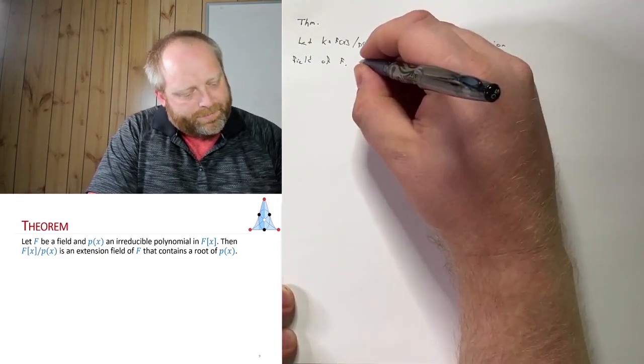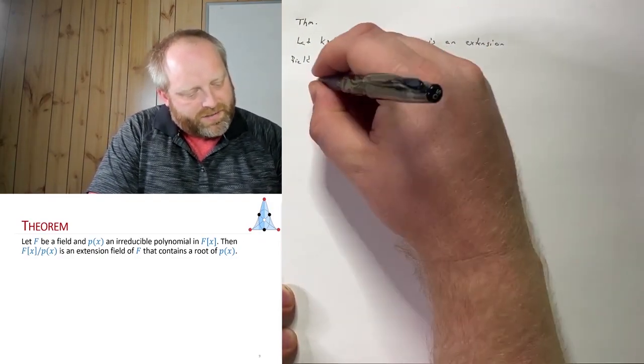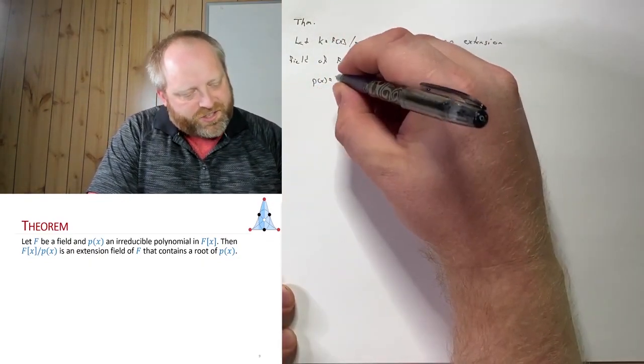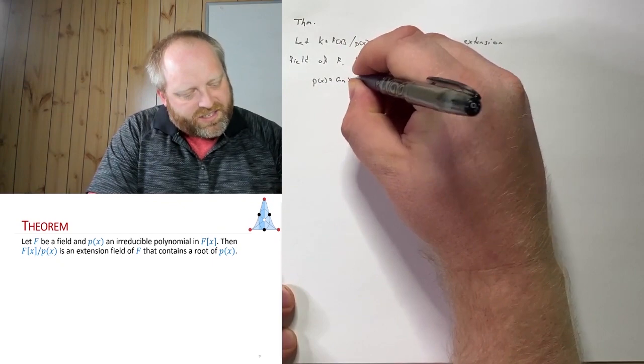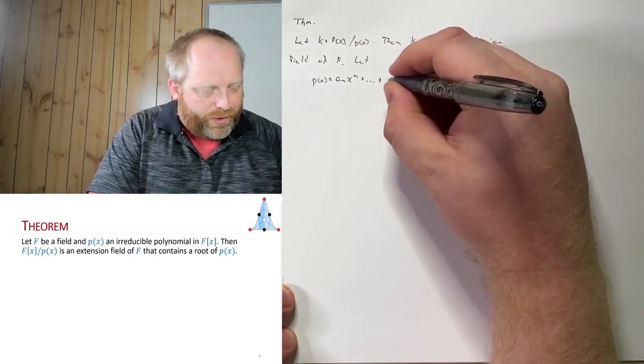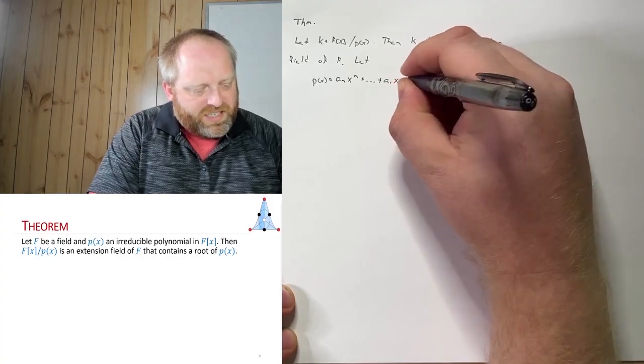Let's let p(x) have the following form. So p(x) equals a_n x^n plus all the way down to a_1 x plus a_0.